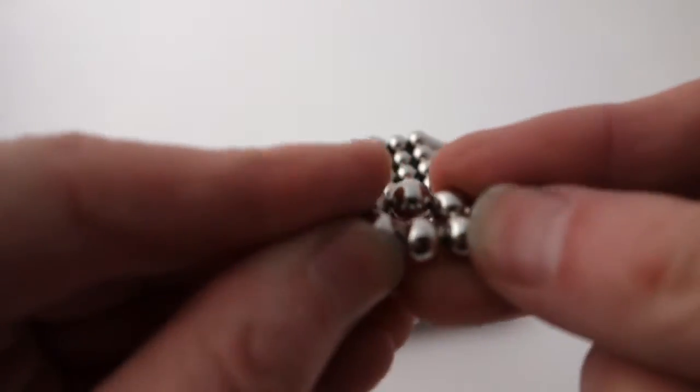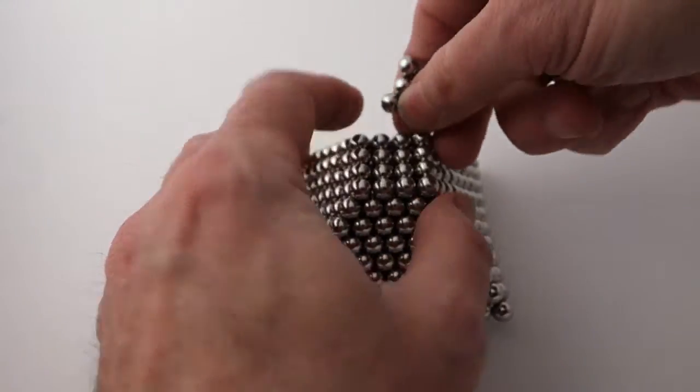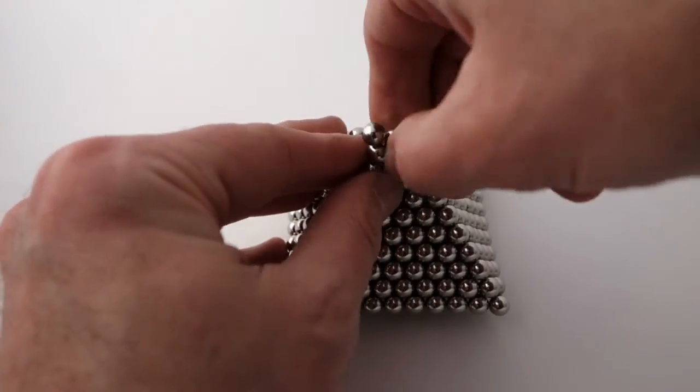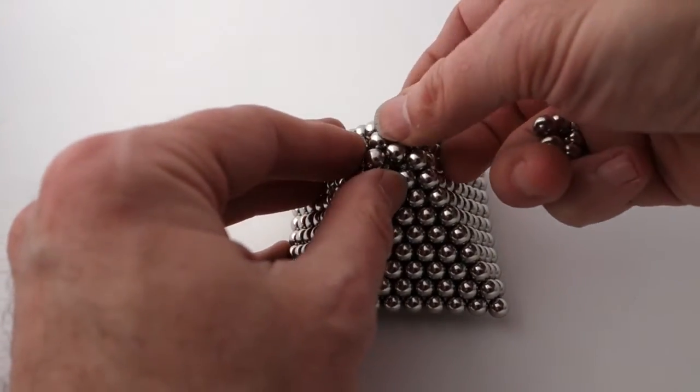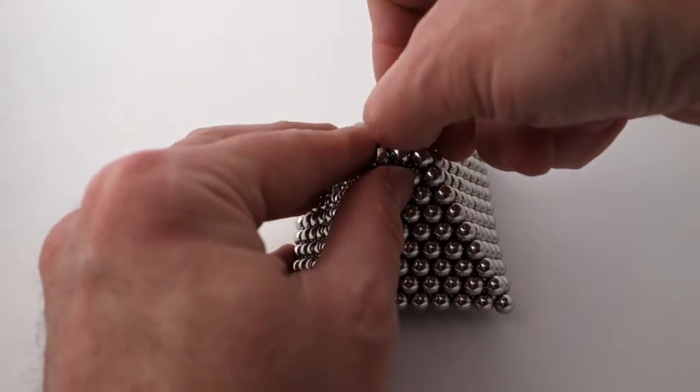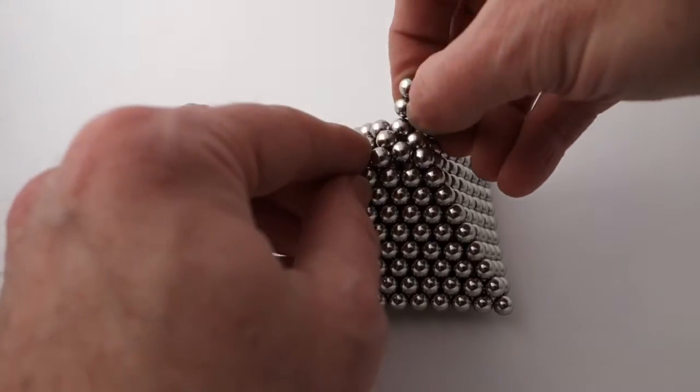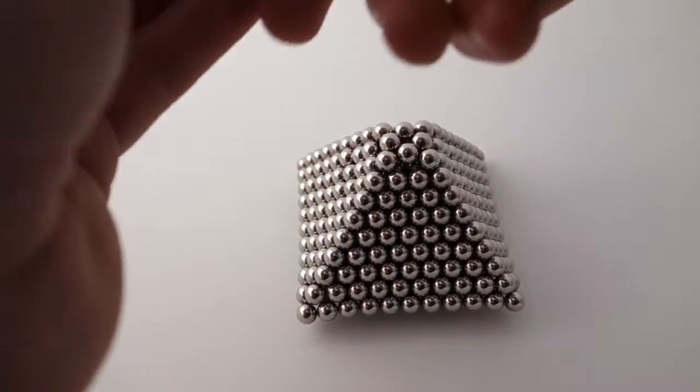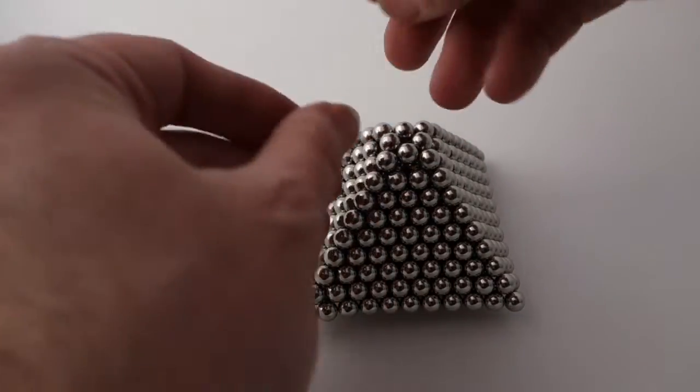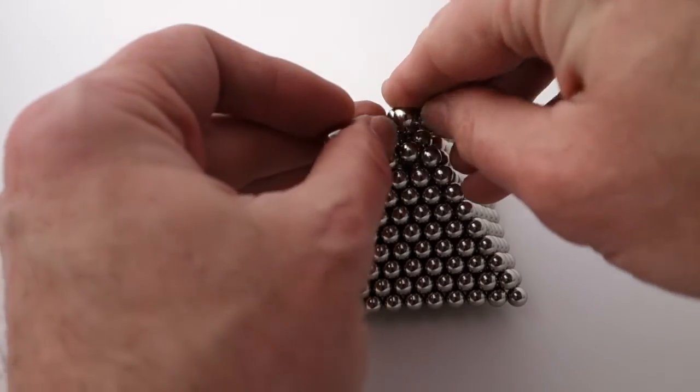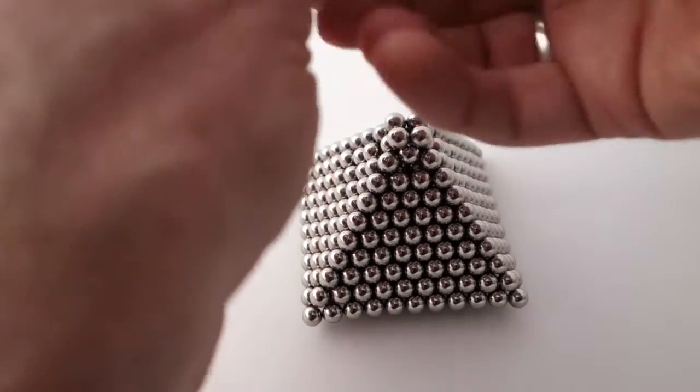Now the next one's just going to be an eight ring, a single square. At this point you sort of have to open it - just leave it for a minute. Now this is the part, it's not going to sit very flat right now.